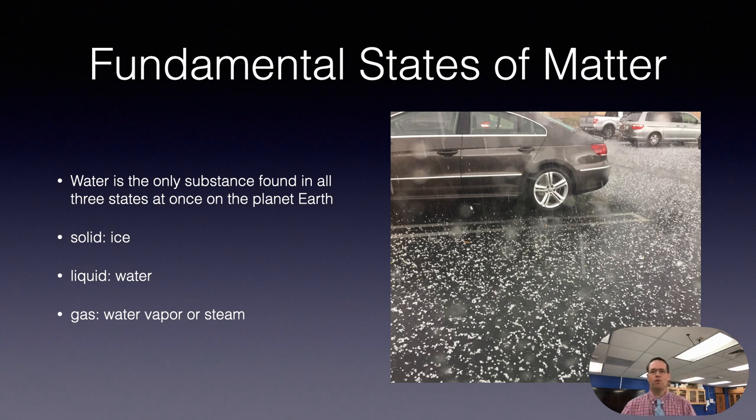Now, we all have seen various kinds of weather. If it rains, water is coming down as liquid. If it snows or hails, water is coming down as a solid form, and eventually everything dries out. Where does that water go? Well, it transforms into invisible water vapor or steam and goes away.